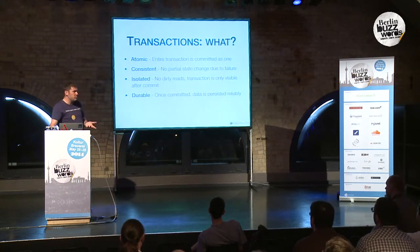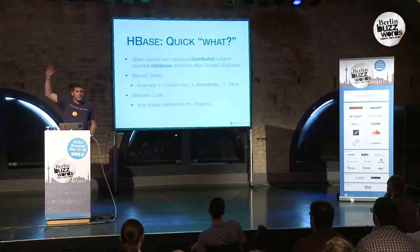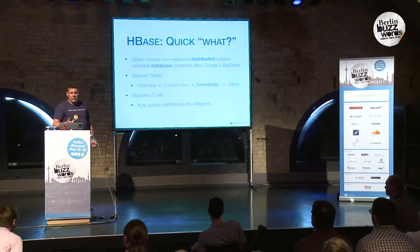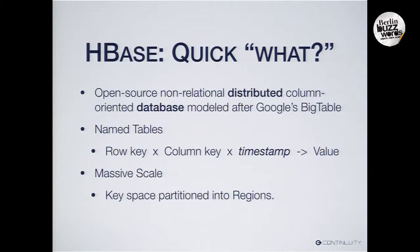This is what we wanted to implement over HBase. Very quickly: HBase is a distributed columnar store. It has named tables, and each table is essentially a mapping from a composite key — row key, column key, and timestamp — to a value. How does it achieve its massive scale? It partitions that key space into regions, and each region is served autonomously by a region server. These region servers don't talk to each other, so all operations are self-contained and very efficient.